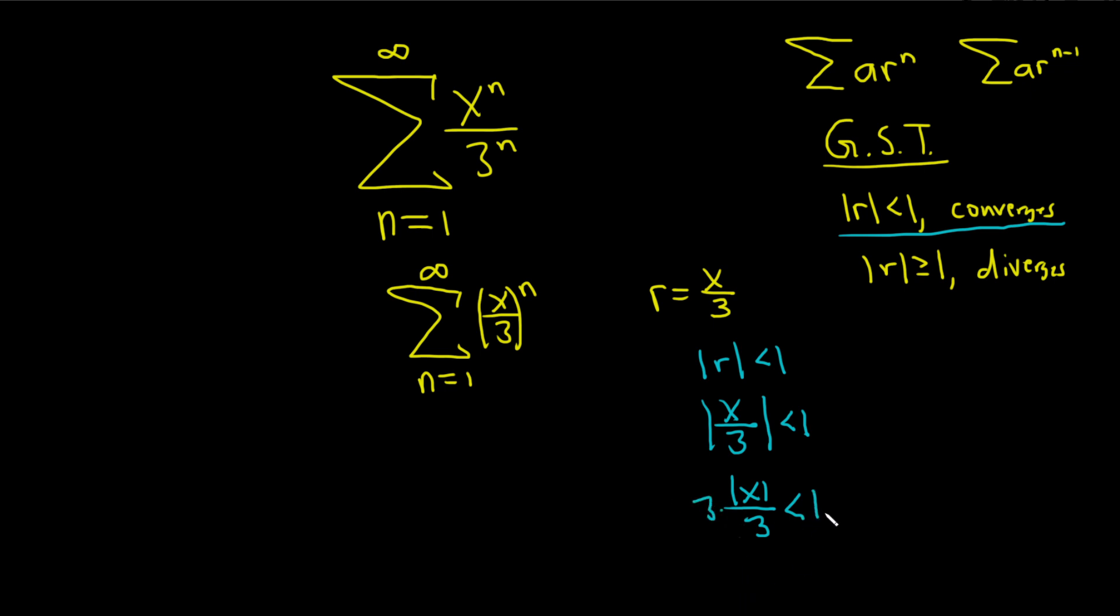And this is less than 1. But let's go ahead and multiply by 3 on both sides. That will give us the absolute value of x. This cancels. So we get less than 3.